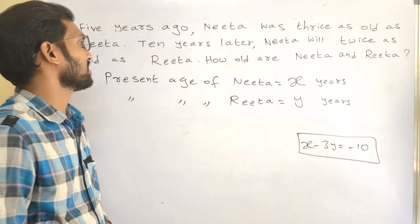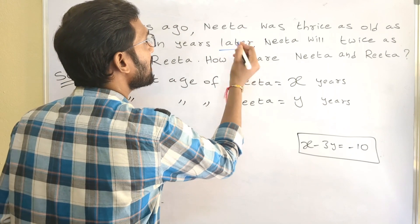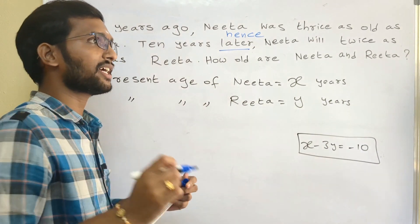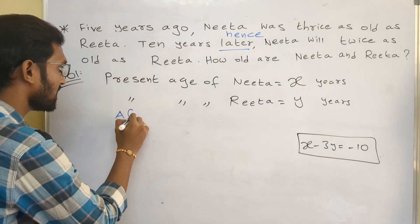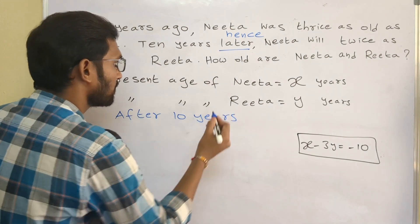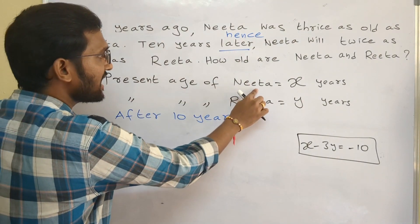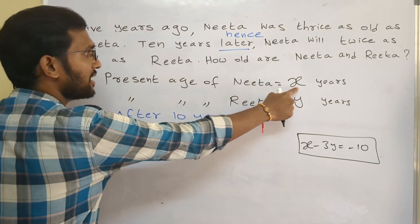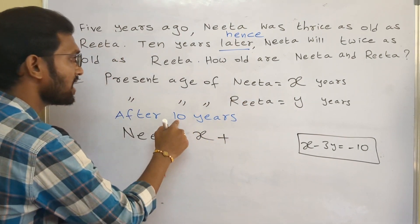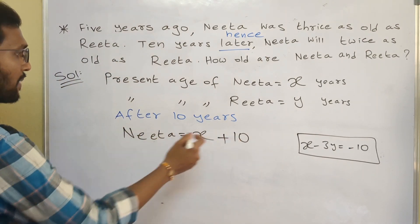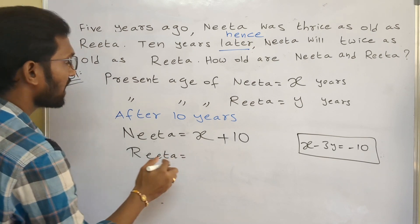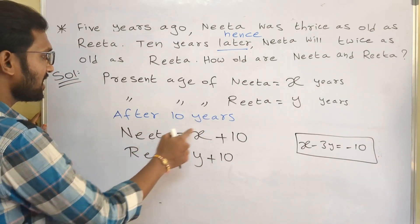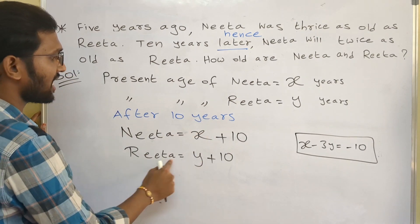Now for the second condition — 10 years later. The word 'later' or 'hence' both mean after. So after 10 years, Nita's present age is X, and after 10 years her age will be X plus 10. Rita's present age is Y, so after 10 years her age will be Y plus 10.